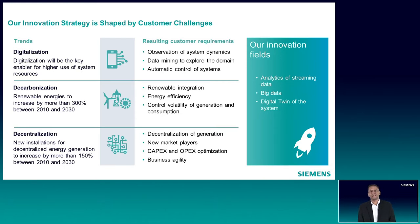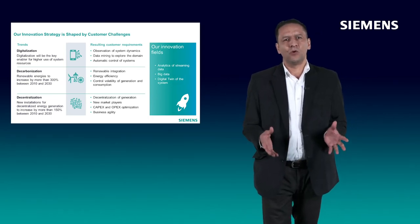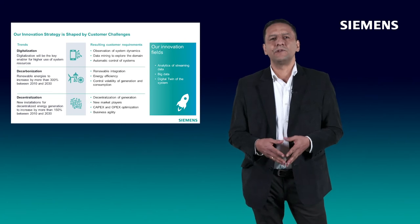This brings questions related to how they are integrated in the power systems and how to control and manage the volatility of these resources. The last one is decentralization. New installations for decentralized energy generations increased by more than 150 percent between 2010 and 2013. The decentralized generation brings new challenges to system operators and planners and requires business agility.